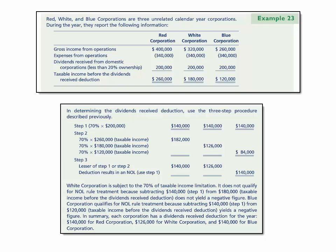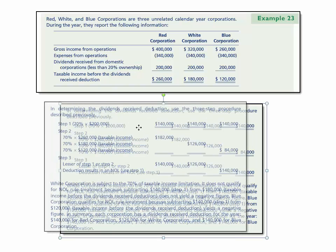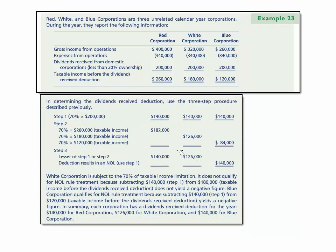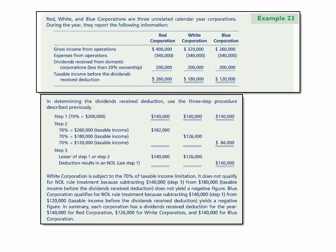Now we'll work through the three-step procedure. Step one: we take 70% of $200,000 for Red, White, and Blue — that gives $140,000 each. Step two: we take 70% of the taxable income — 70% of $260,000 for Red, 70% of $180,000 for White, and 70% of $120,000 for Blue. White Corporation is subject to the 70% taxable income limitation. It doesn't qualify for the NOL rule treatment because subtracting $140,000 from $180,000 taxable income before the dividend received deduction does not result in a negative figure.